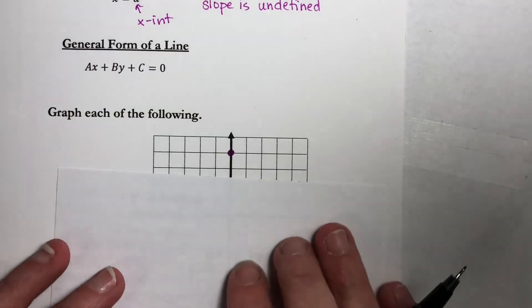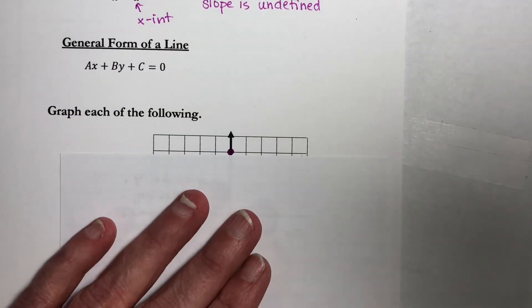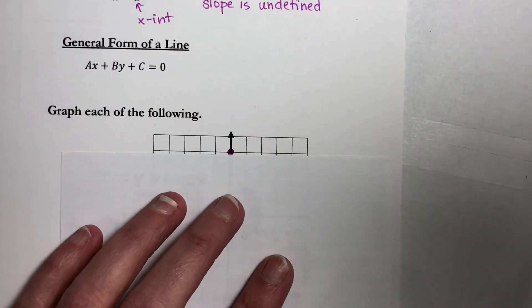This will be a horizontal line through 4, and I'm going to do this in a different color, so maybe it will show up a little bit better. But basically, it's going to be that line right there.